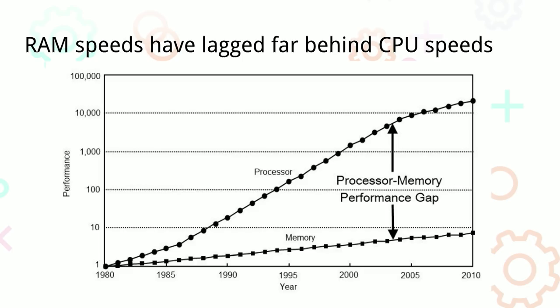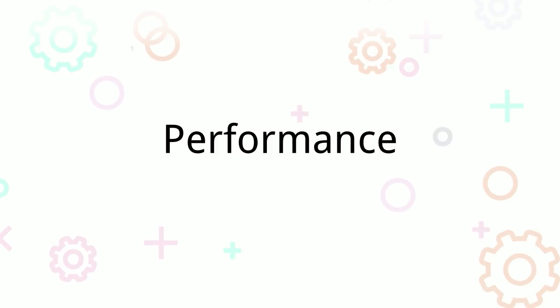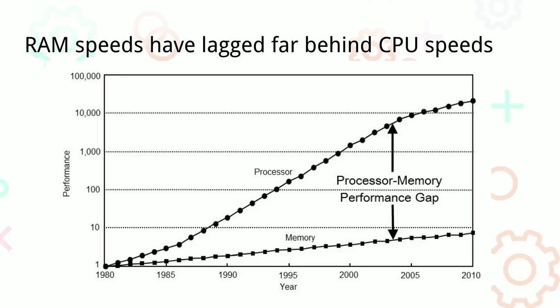CPU speeds have gone up. When I was growing up there was a lot of talk about Moore's Law. We went from megahertz to gigahertz and CPU speed kept increasing. But one speed that hasn't been increasing nearly as fast is the speed of reading data out of RAM. So it's become very cheap and quick to process data, but accessing the data is where the bottleneck is.